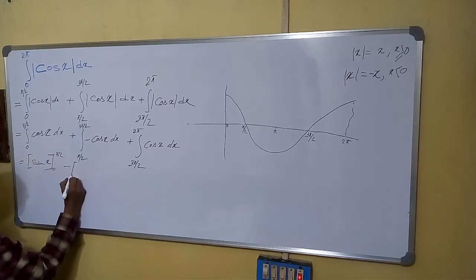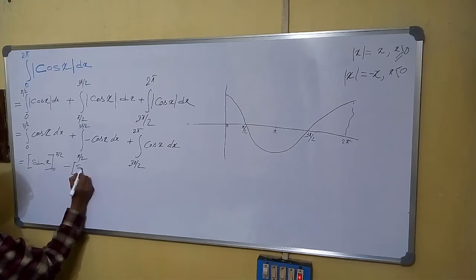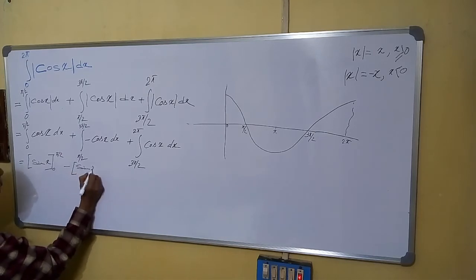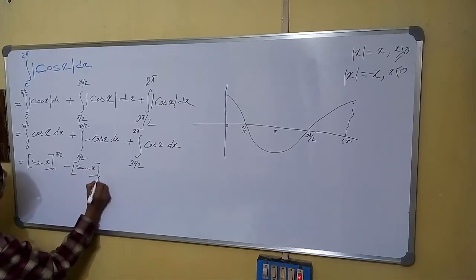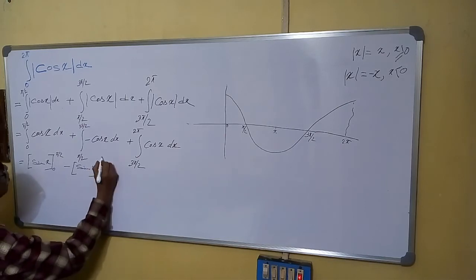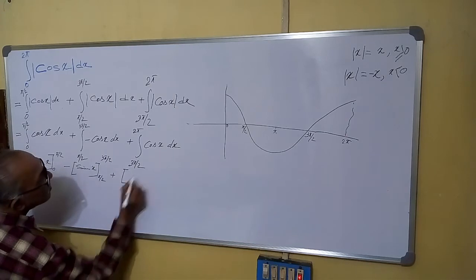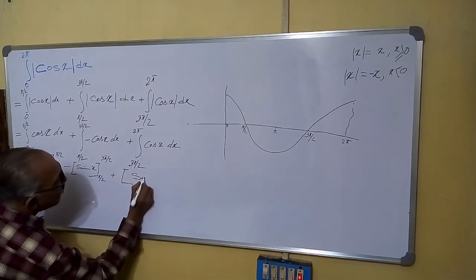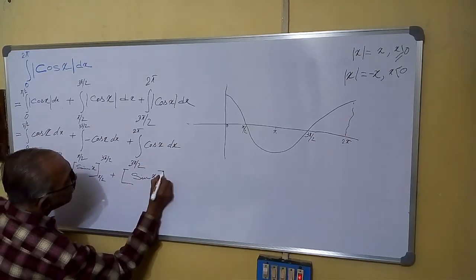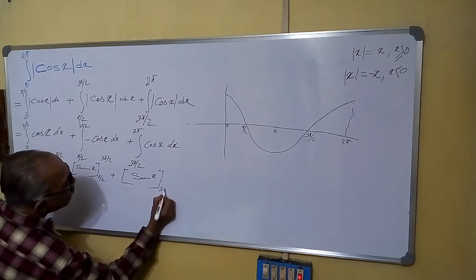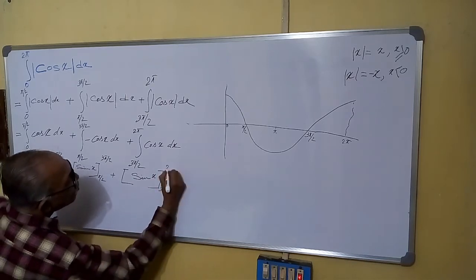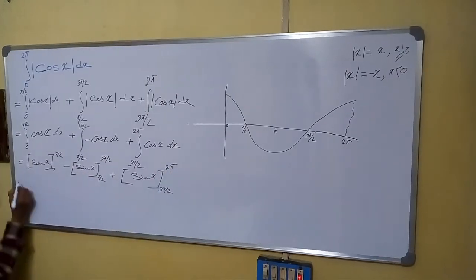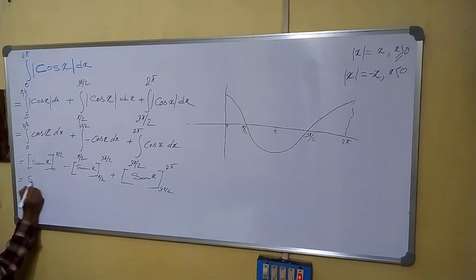It will be again sin x from pi by 2 to 3 pi by 2, plus. Again, this is sin x from 3 pi by 2 to 2 pi.